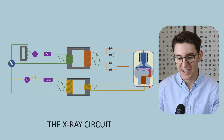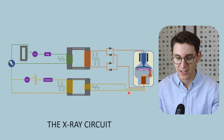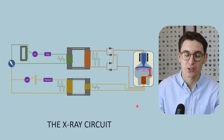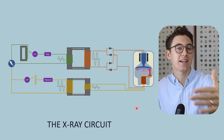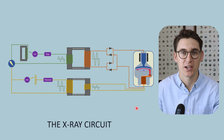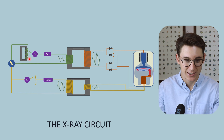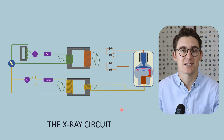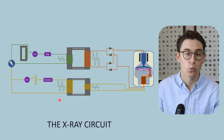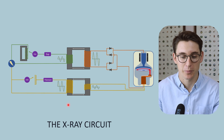We've looked at the x-ray tube and the various constituents that make it up, and we've examined what happens to x-rays after they leave the tube prior to interacting with the patient. Now let's turn our attention to the circuit required to power the x-ray tube and the various components we can change to manipulate our x-ray beam.